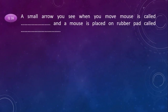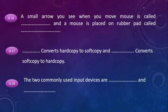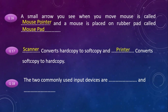A small arrow you see when you move the mouse is called the mouse pointer, and the mouse is placed on a rubber pad called the mouse pad. Scanner converts hard copy to soft copy, and printer converts soft copy to hard copy. The two commonly used input devices are keyboard and mouse.